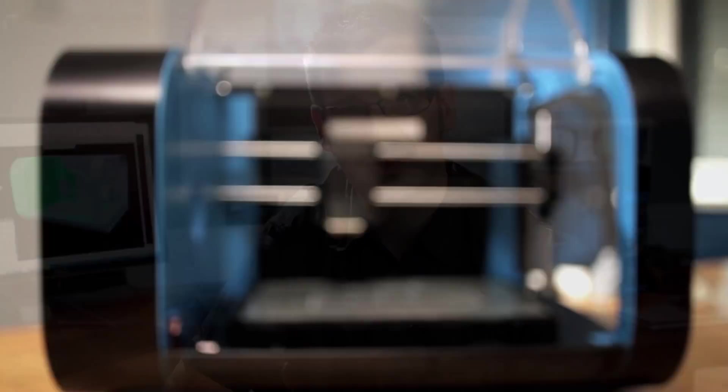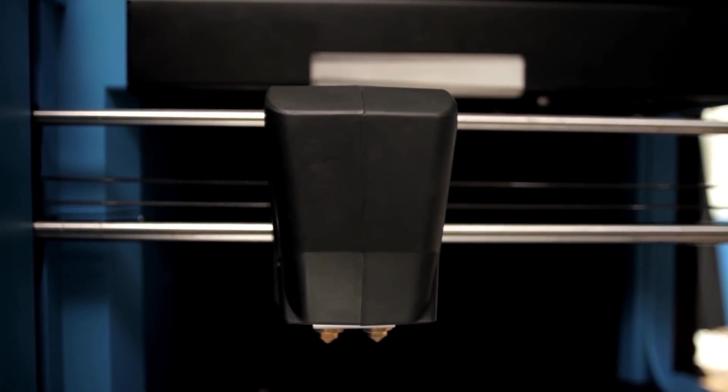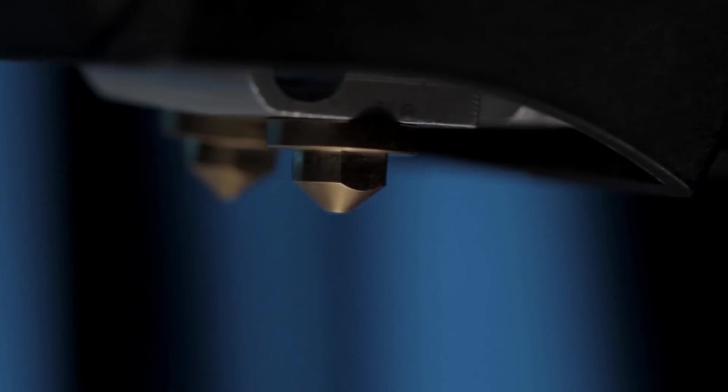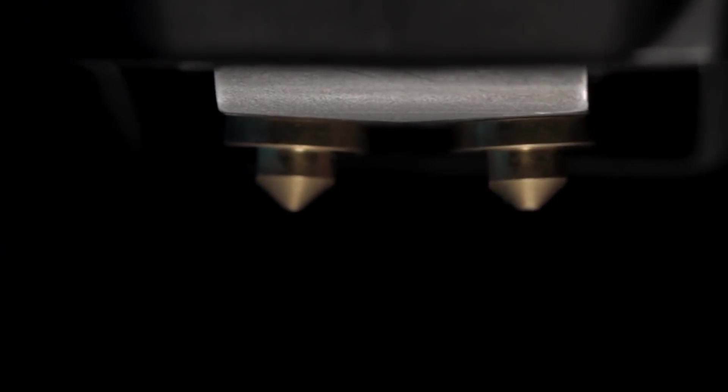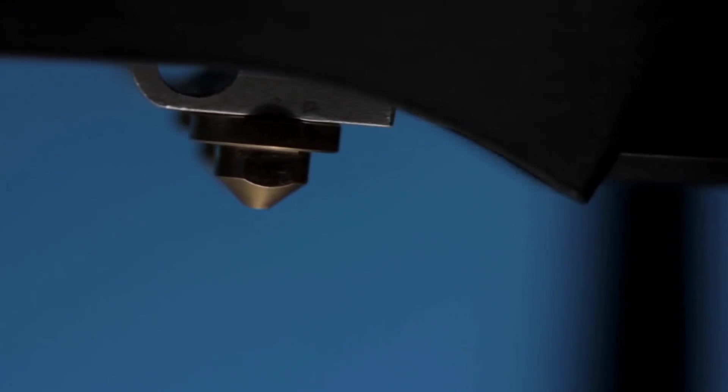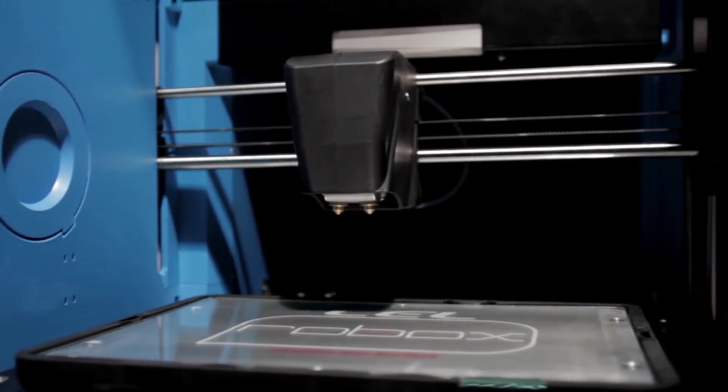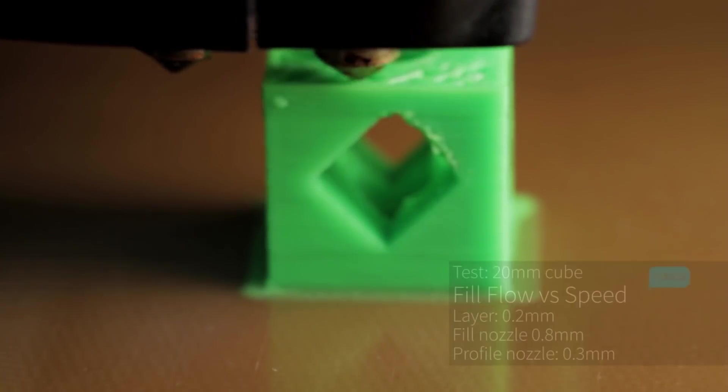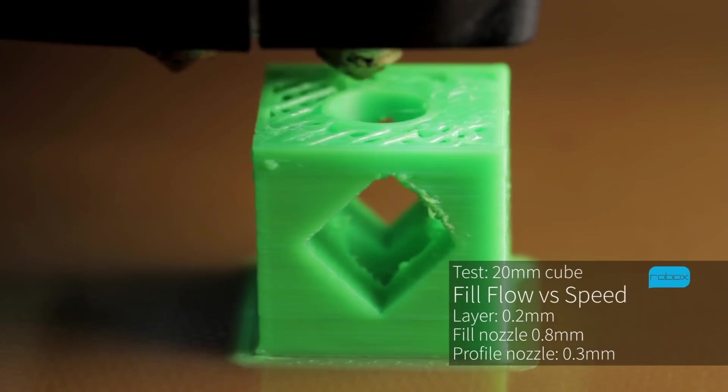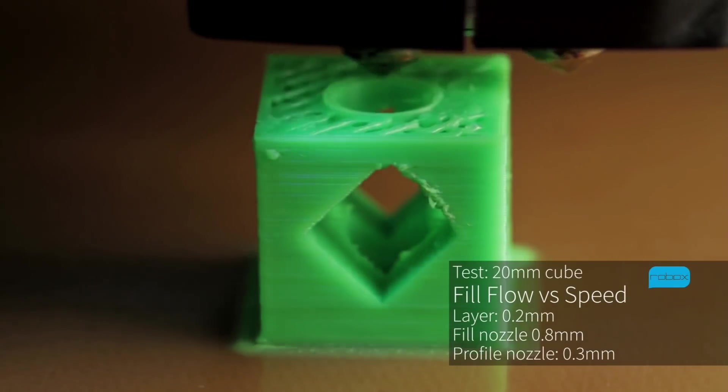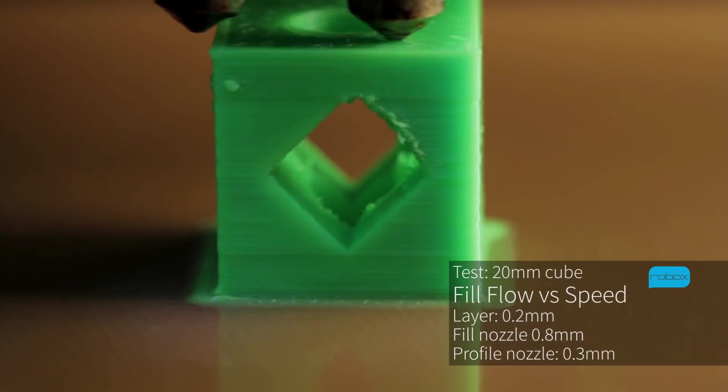Never before has a 3D printer been offered with this higher specification at such a low price. In our head, we have a twin nozzle system. This has a 0.3mm and a 0.8mm nozzle. This means that you have a high resolution but low speed nozzle for completing the high quality surface finish and perimeter of the part, and then a much larger nozzle which is capable of filling the parts, resulting in print times of up to 300% greater than our competitors.